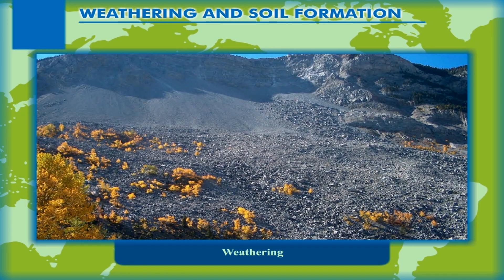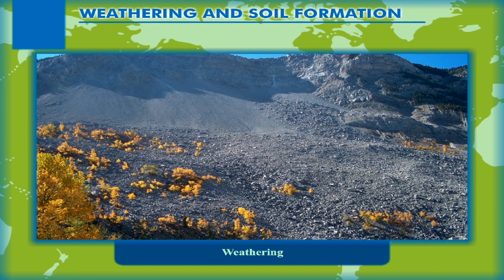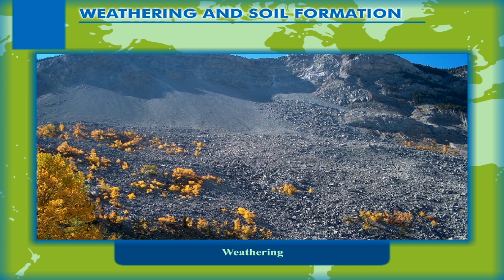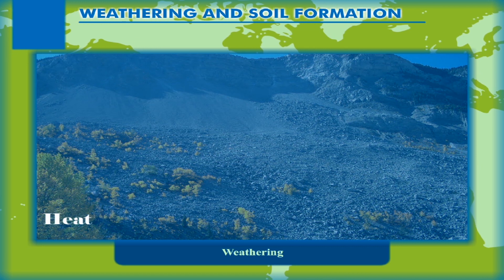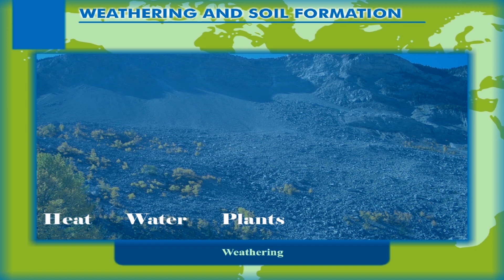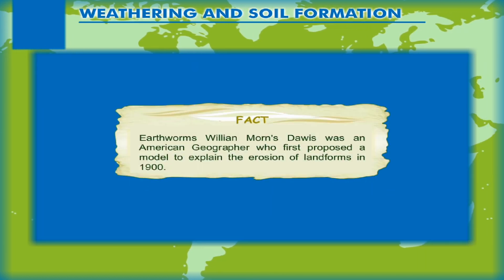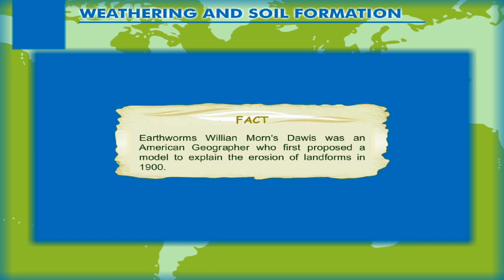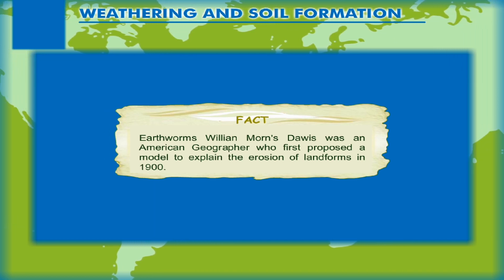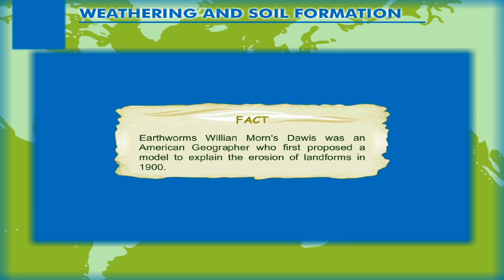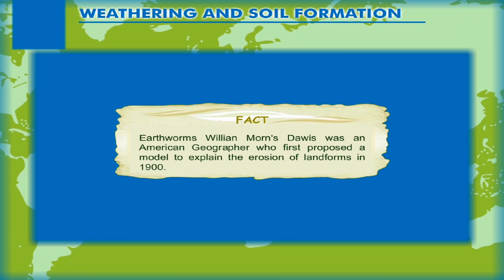Weathering can be defined as the disintegration and decomposition of the rocks. It is caused by various natural agents like heat, water, plants, and even human beings. William Morris Davis was an American geographer who first proposed a model to explain the erosion of landforms in 1900.